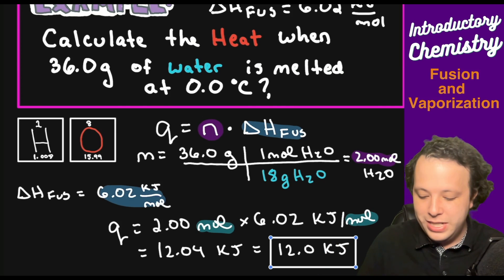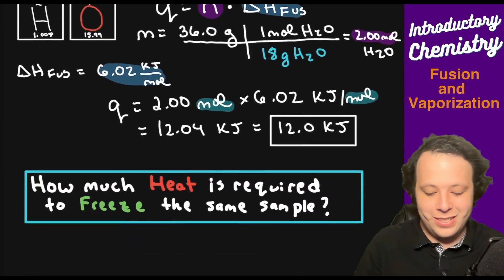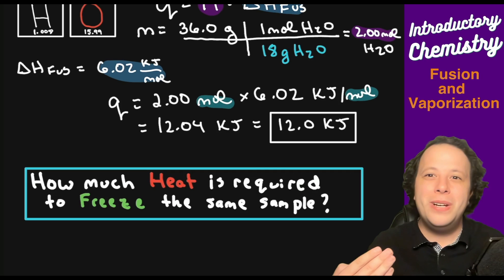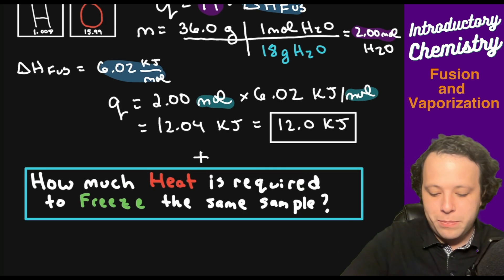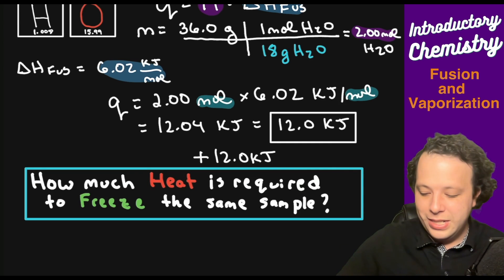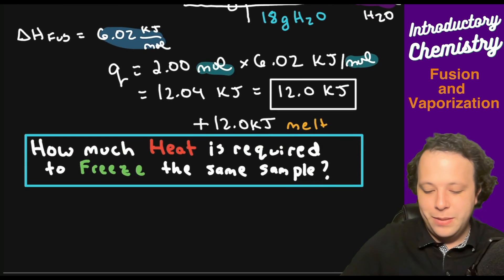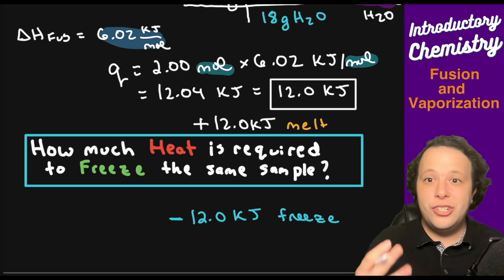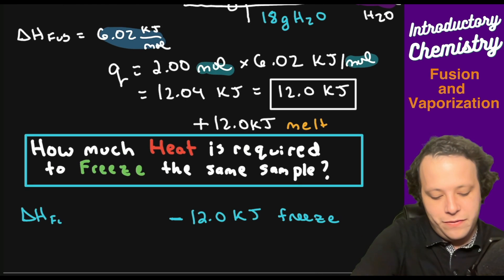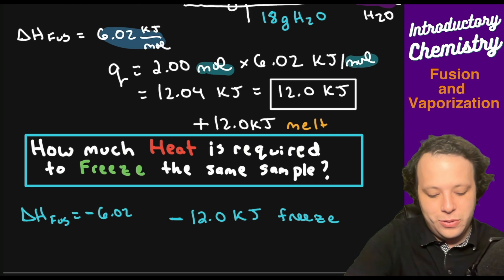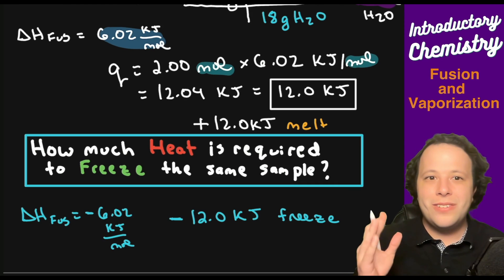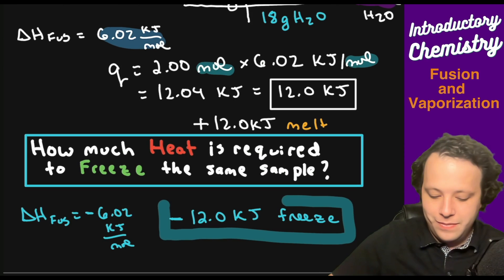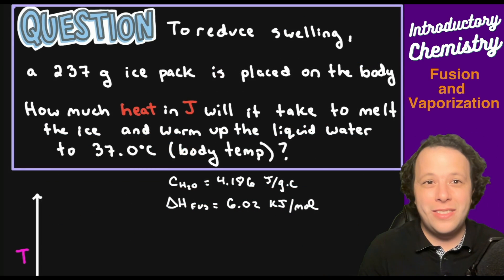The follow-up question: how much heat is required to freeze that same sample? It's just a sign change. To melt it was positive 12.0 kJ, so to freeze it is negative 12.0 kJ. The delta H of fusion for freezing would be −6.02 kJ/mol. The sign of delta H changes depending on whether we're freezing or melting.